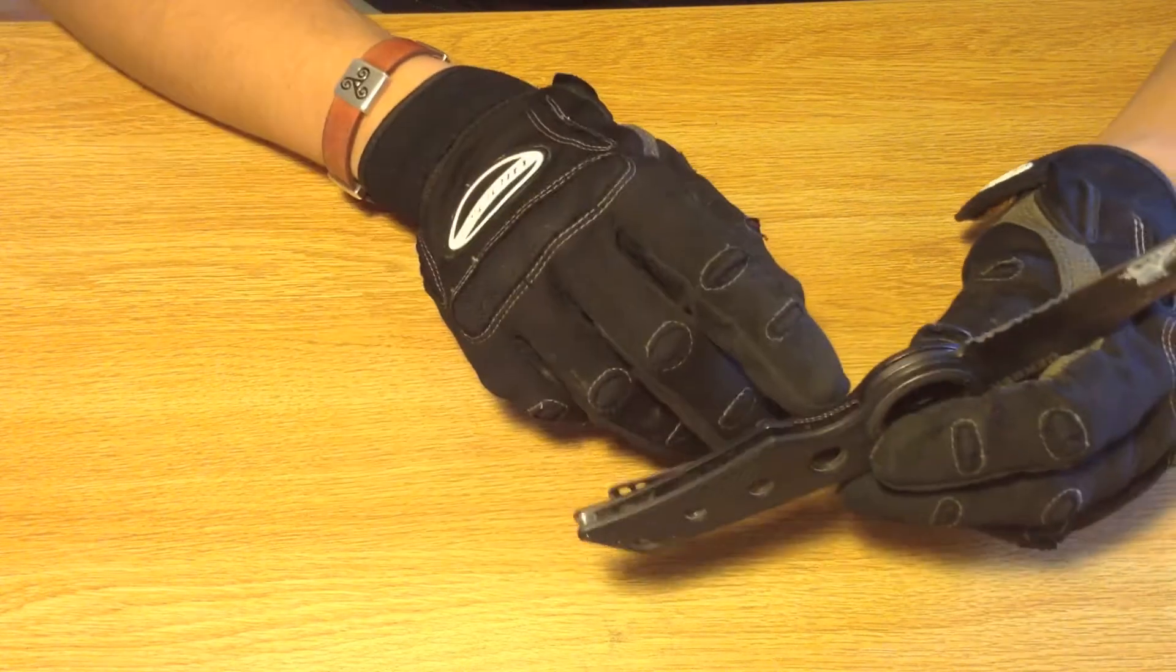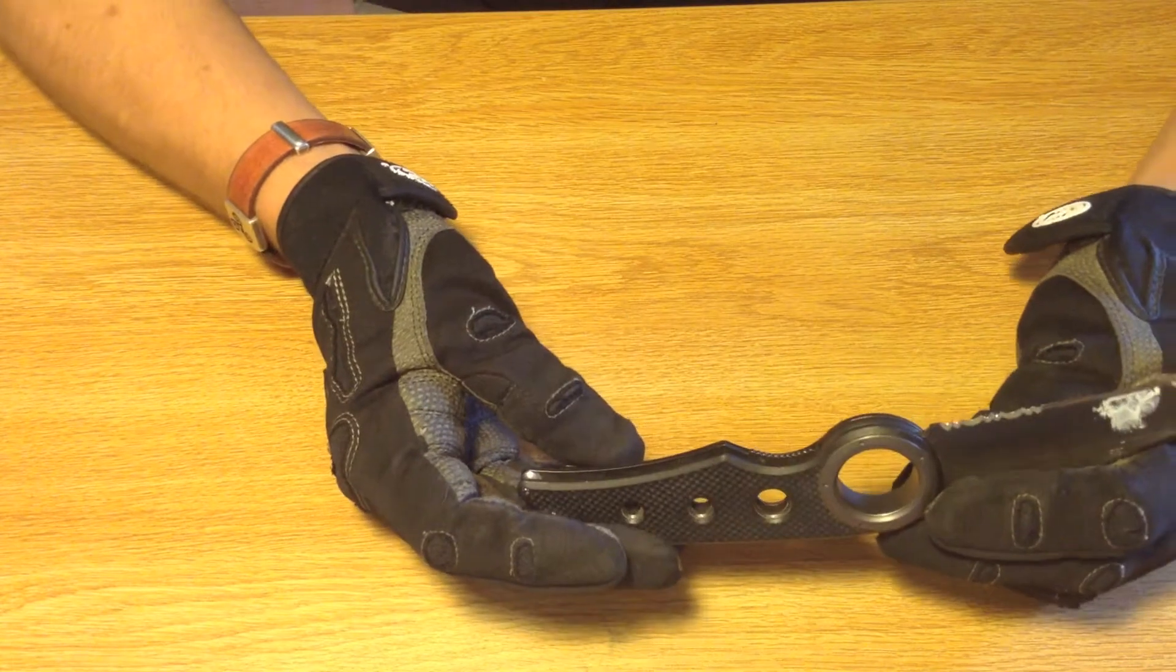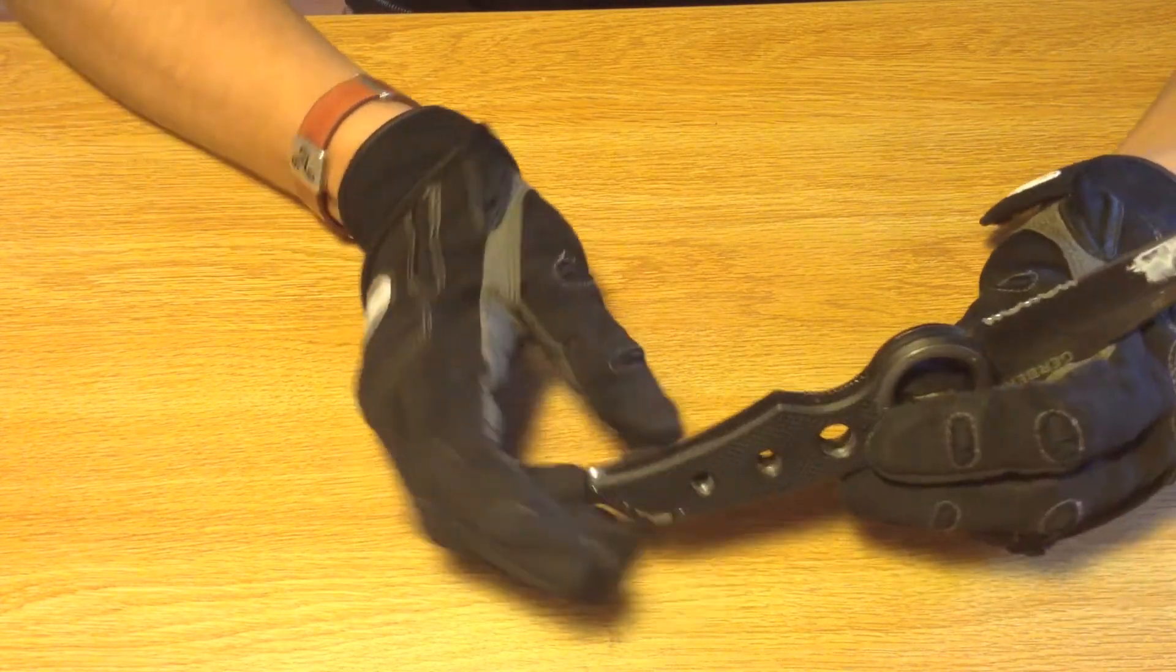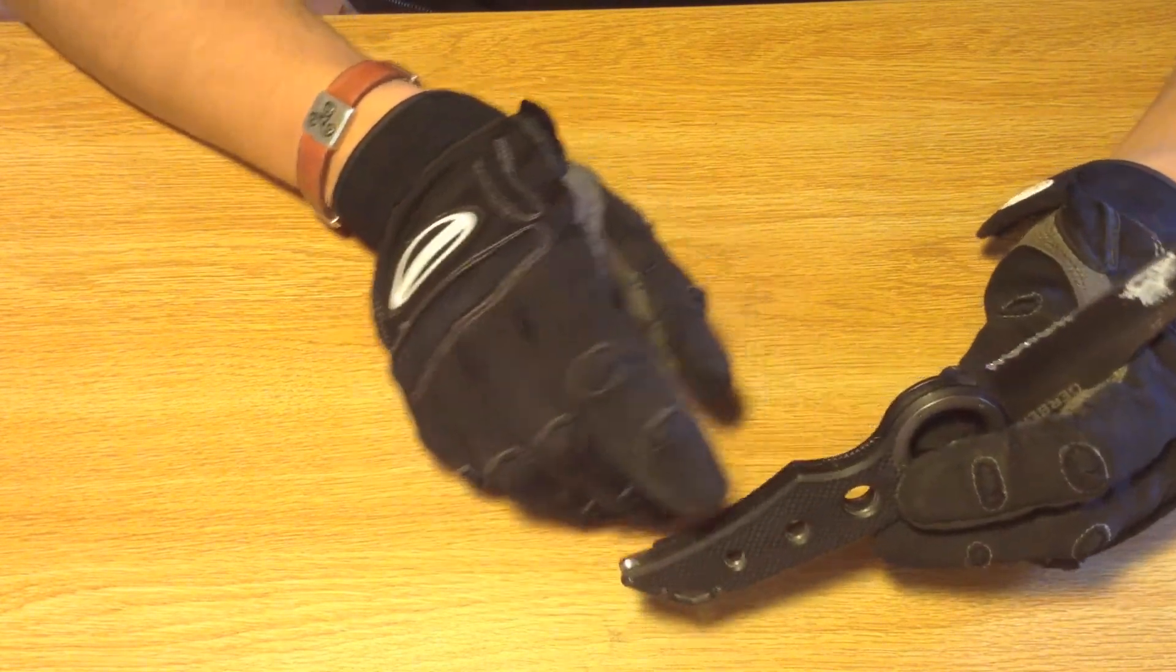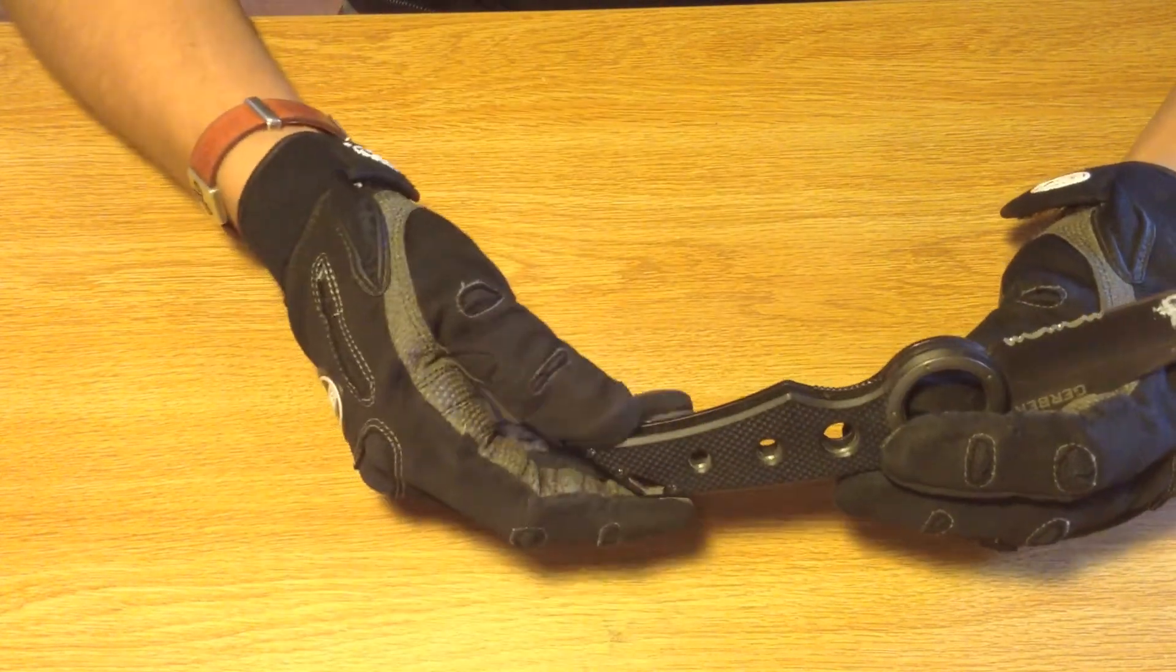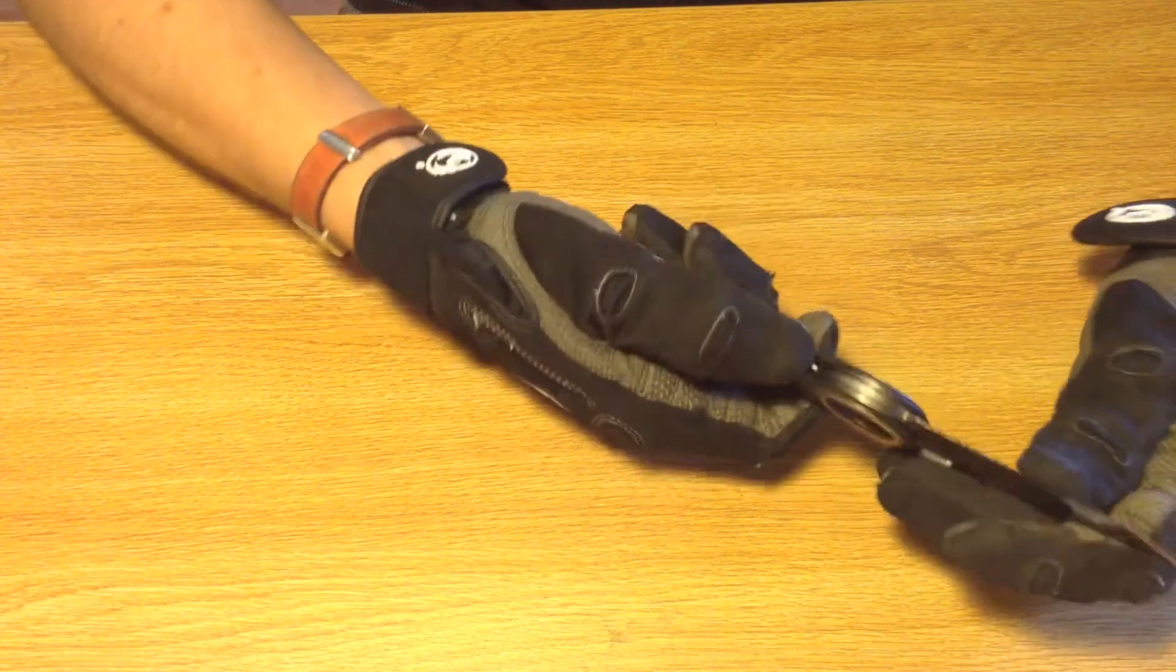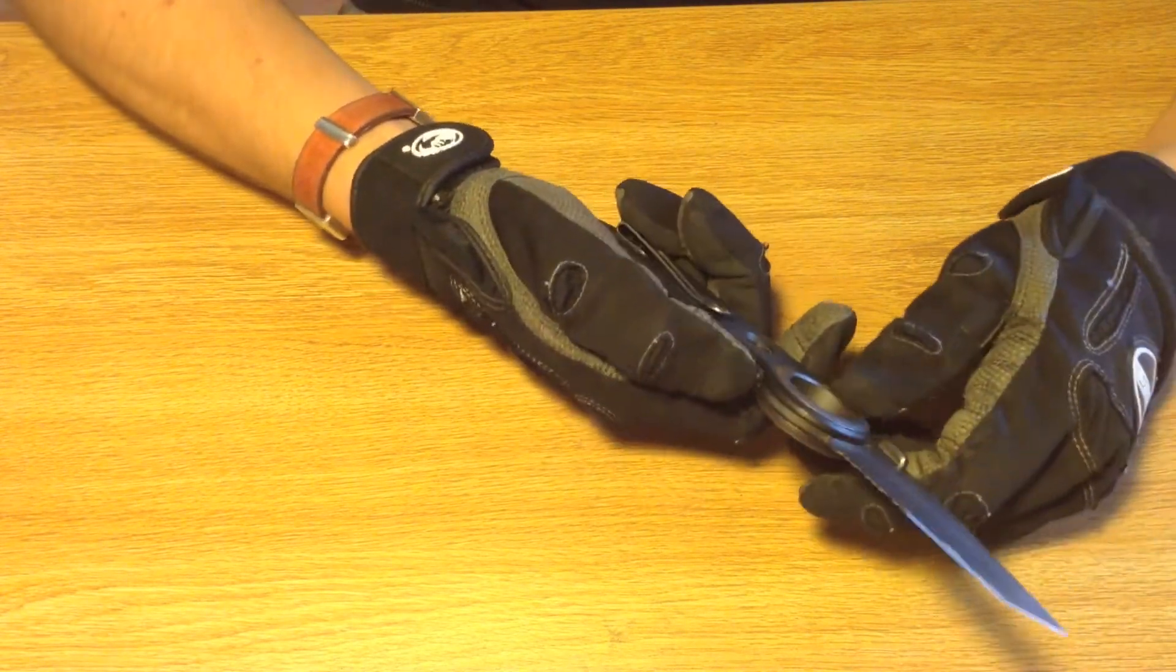Another is that they have a liner lock. Liner locks are similar to frame locks, but they are weaker. Liners are usually much thinner. Also, it takes the liner out of its position, hindering the structural stability of the knife. So it's more likely to fail than a frame lock or something sturdier.